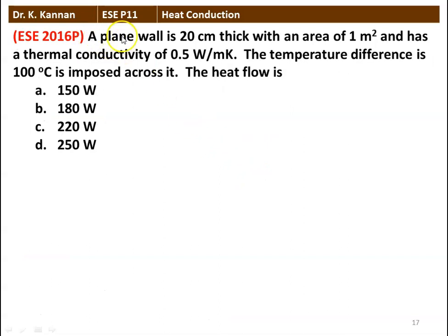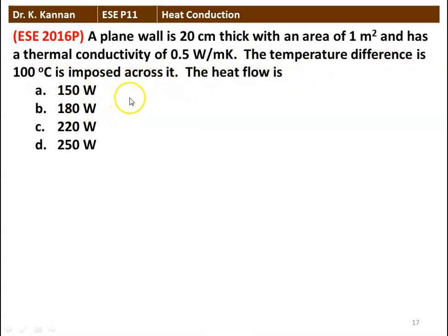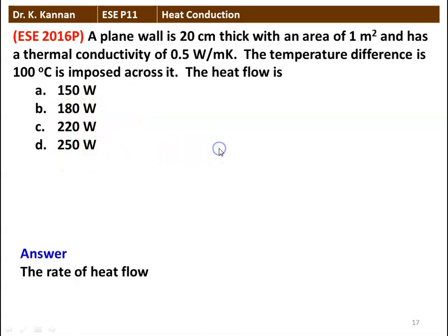Next question: a plane wall is 20 centimeter thick with an area of 1 meter square, has a thermal conductivity of 0.5 watts per meter Kelvin. The temperature difference is 100 degree Celsius imposed across it. The heat flow options are: (A) 150 watts, (B) 180 watts, (C) 220 watts, (D) 250 watts.